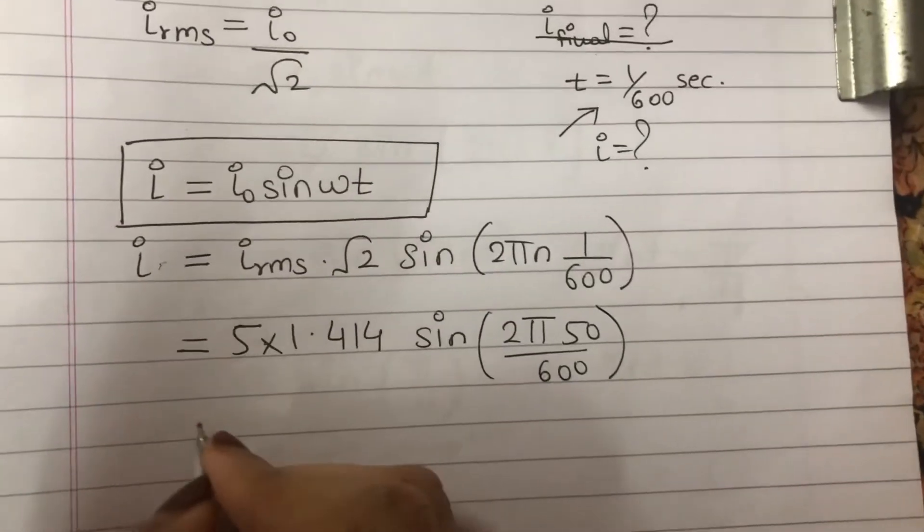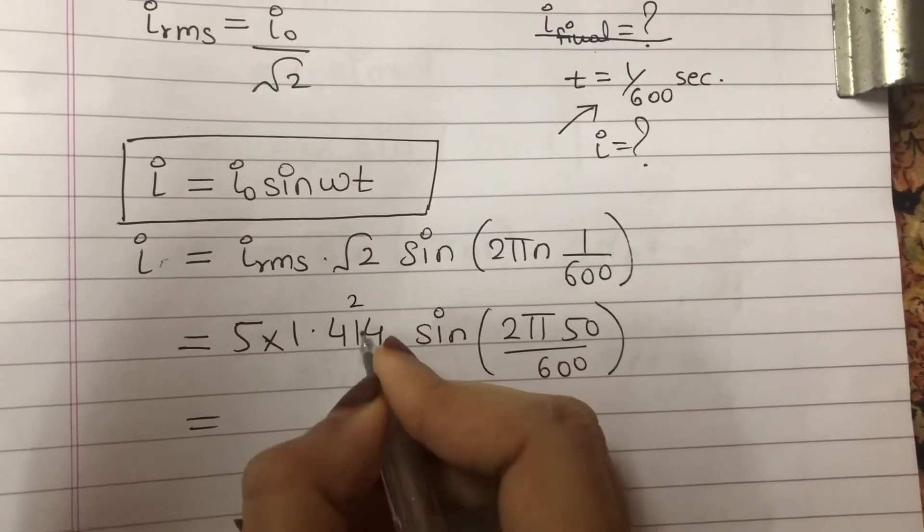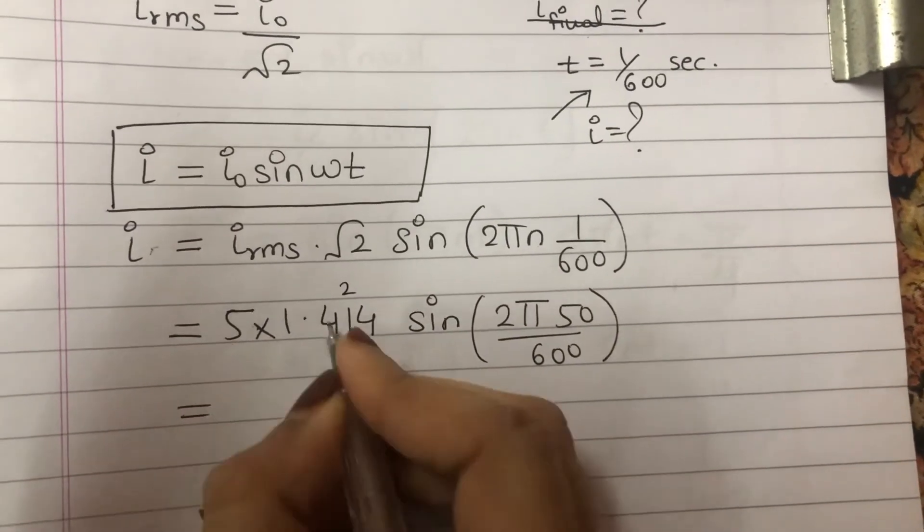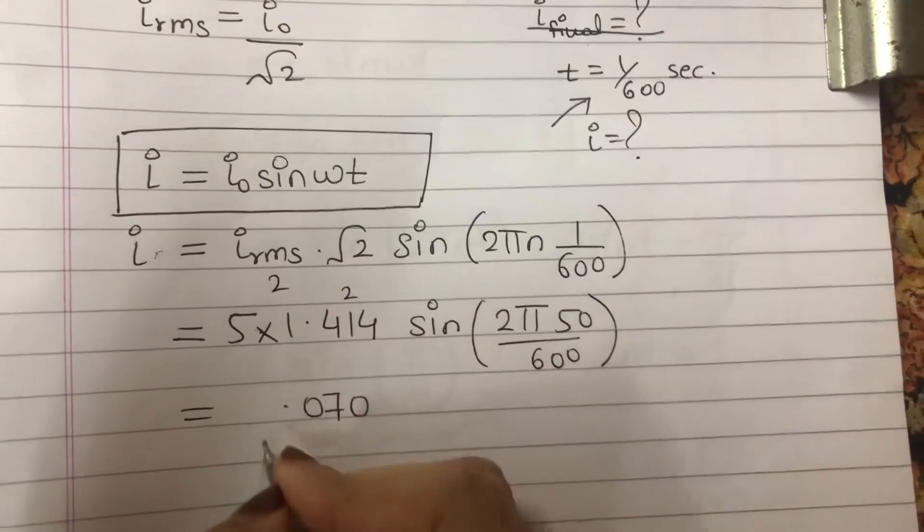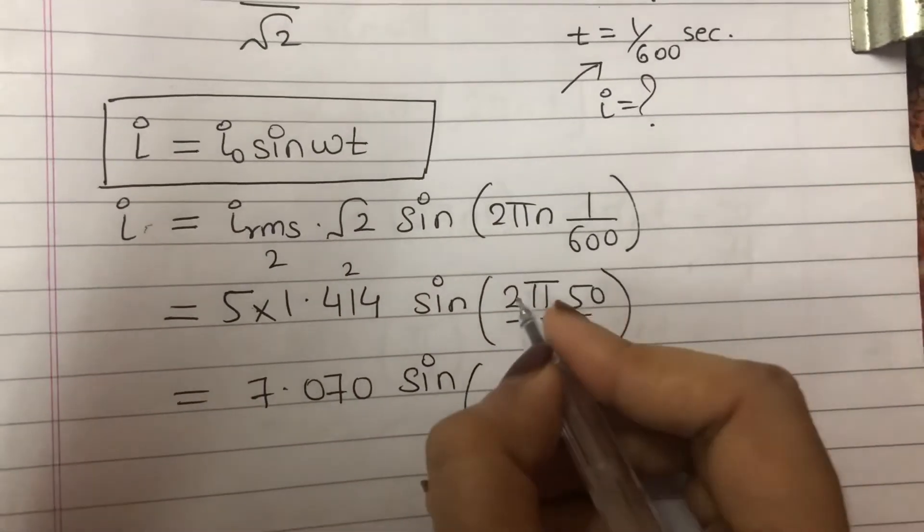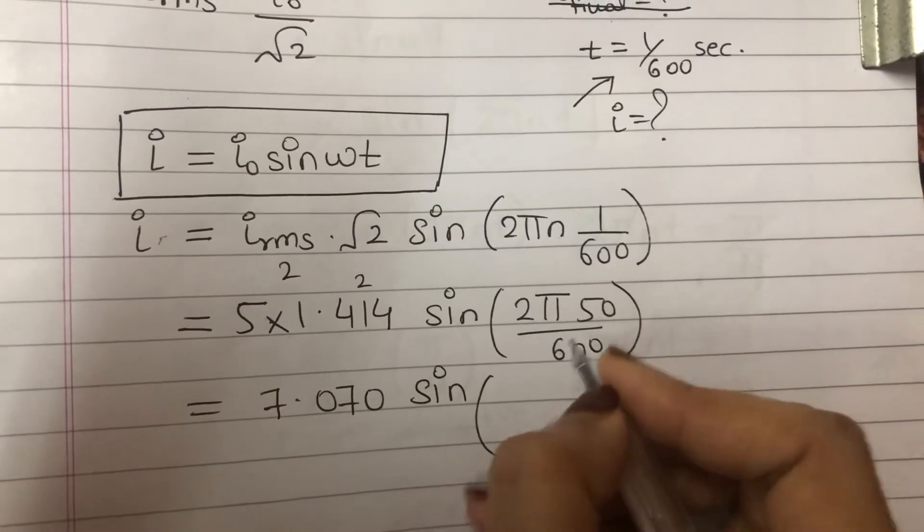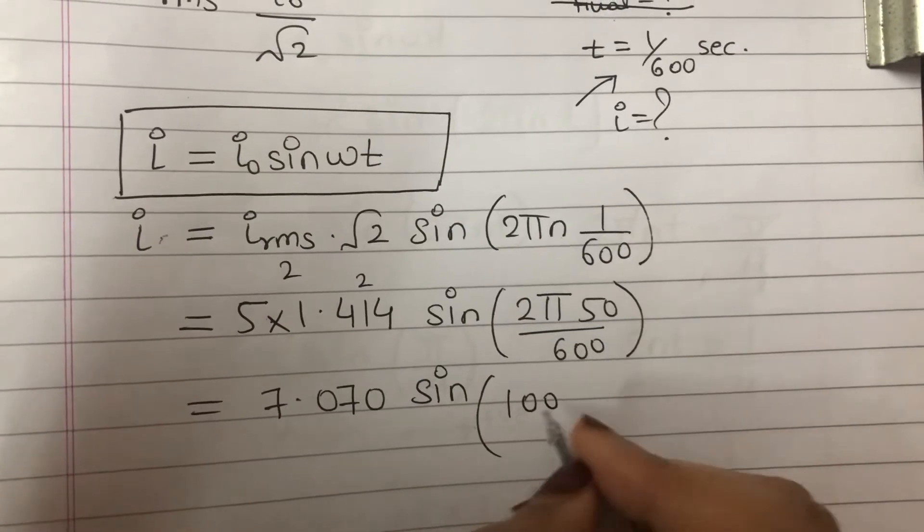Okay, so 2 times 5 is 10, 2 fives are 10, so this becomes 100. Pi upon 600, this 0 gets cancelled, so it is 7.07. I will not take this 0 because after the decimal point, if last is 0, then we don't consider it. Sin pi upon 6.